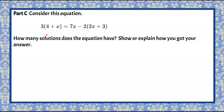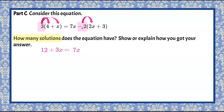Welcome back. We're going to find the number of solutions for this equation. We begin by distributing: 3 multiplied by 4 is 12, and 3 multiplied by X is positive 3X, since we multiply by both terms inside. Bringing down the equal sign and 7X term, we see the negative 2 — subtracting 2 is the same as adding negative 2. So negative 2 multiplied by 2X is negative 4X, and negative 2 multiplied by 3 is negative 6.